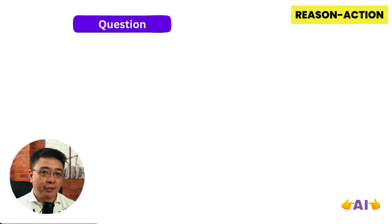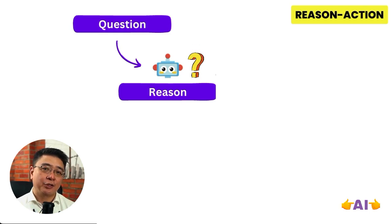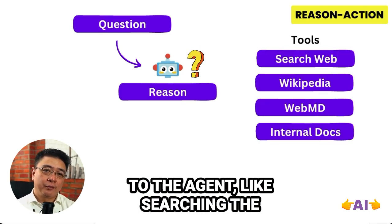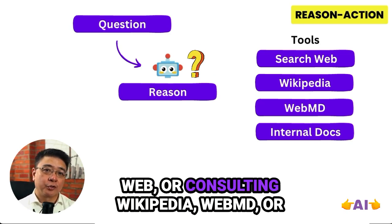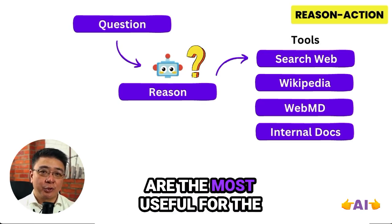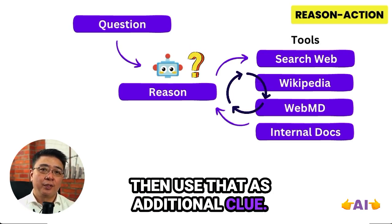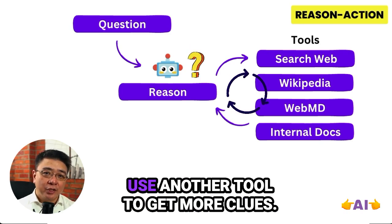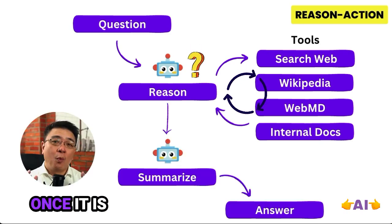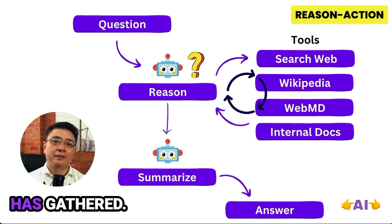There is also the Reason Action or the ReAct Agent. In this pattern, AI plays like a detective agent — it examines clues from the questions and available answers and decides if it needs to take an action. There are multiple tools available to the agent, like searching the web or consulting Wikipedia, WebMD, or internal documents. It decides which tools are most useful for the given question. If it retrieves information, it uses that as an additional clue; if it needs more, it can use another tool. Once satisfied with the clues, it generates the response based on everything gathered.